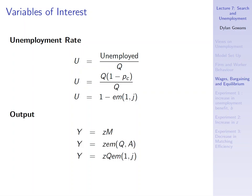What about output? Output is Z times M — the number of matches made — because only matched firms and workers produce anything, and each pair produces Z. We can replace M with our matching function, and because of constant returns to scale technology we can factor out Q. So output equals Z times Q times the fraction of workers who match: the number of people in the labor force times the fraction who actually match, with each match producing Z.